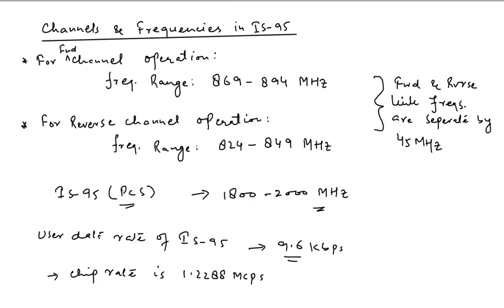The user data rate in IS95 is 9.6 kbps. The chip rate is 1.2288 mega chips per second, equal to 1.2288 × 10⁶ chips per second. As this standard is based on CDMA technology, different users are given different pseudo-random sequences called chips. The chip rate of 1.2288 mega chips per second is approximately equal to 1.24 MHz.